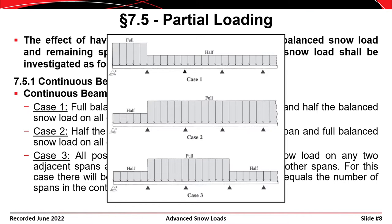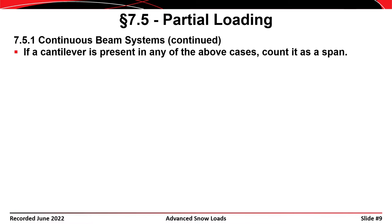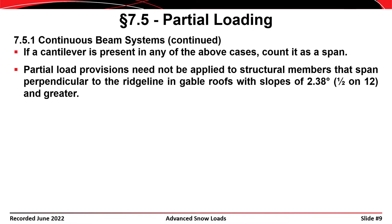To make this a little easier to digest, consider these three cases graphically. Case one has the full snow load in an exterior span with half the snow load in the other spans. Case two has half the snow load in the exterior span and the full snow load in the other spans. Case three is also illustrated. If a cantilever beam is present in any one of the cases, it's counted as a span. Partial load provisions need not be applied to members that span perpendicular to the ridge line in gable roofs with a slope of 2.38 degrees or greater — that is, greater than a half inch per foot.